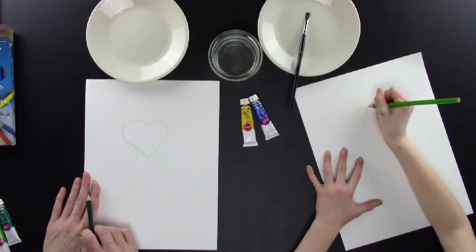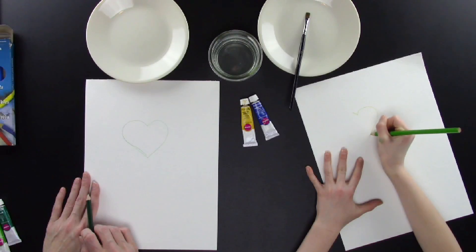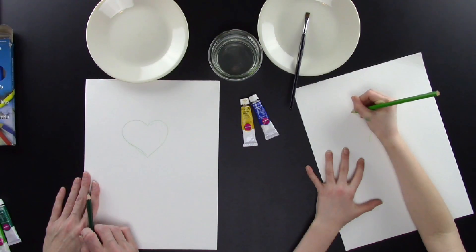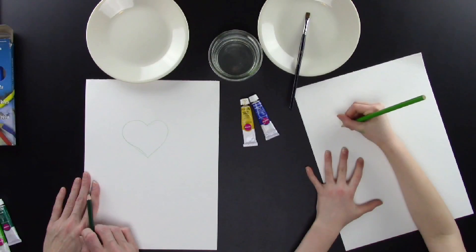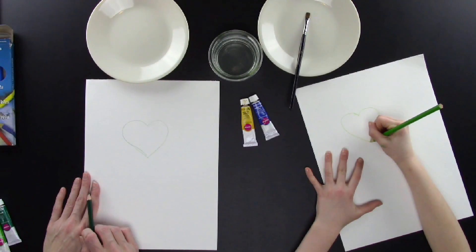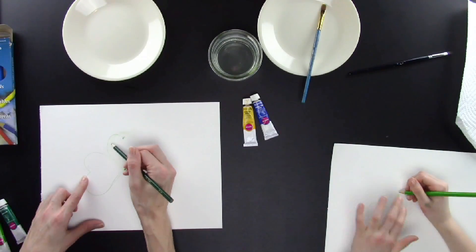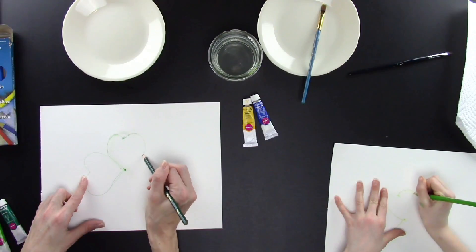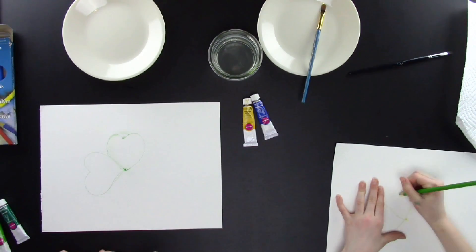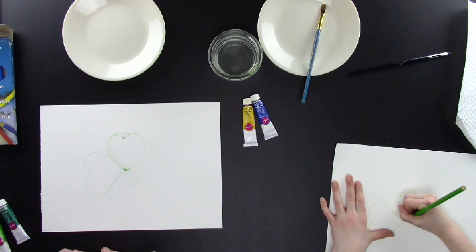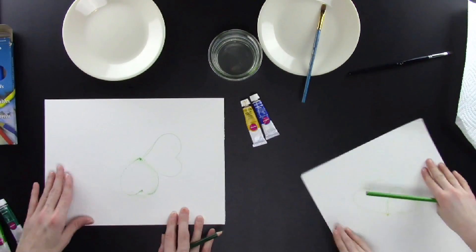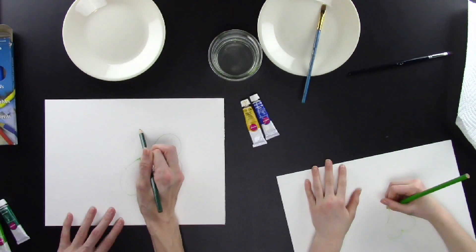Now turn your paper and draw another heart right next to the first one. I drew two dots, one at the top and one at the bottom of my heart to guide me as I drew my heart. It's okay if you mess up, you can just erase it and try again.